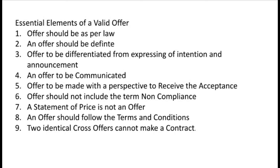For example, P purchased a cow from Q and promised to buy one more if the first cow gives a good quantity of milk. Later, P denied buying one more cow. Q cannot enforce the agreement as it was loose, not clear, and vague. Therefore, an agreement to be agreed upon in future cannot constitute a contract as it is uncertain.